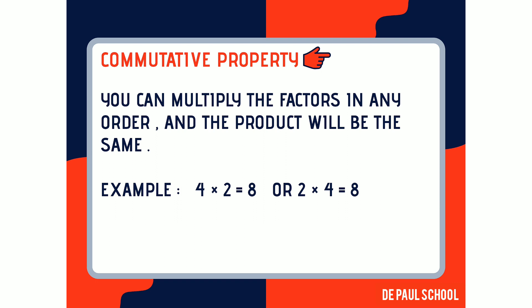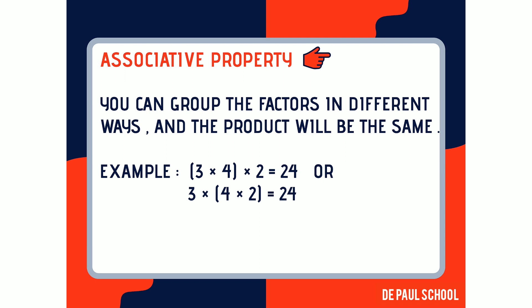The first is commutative property. This means when two numbers are multiplied together, the product is the same regardless of the order of the multiplicands. As you can see in the given example, 4 multiplied by 2 is 8, and 2 multiplied by 4 is also equal to 8. So even if the order of the factors is changed, the answer remains the same.